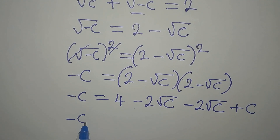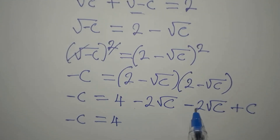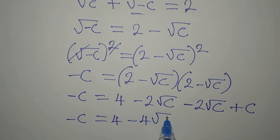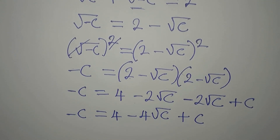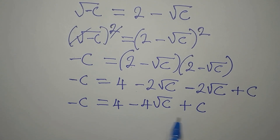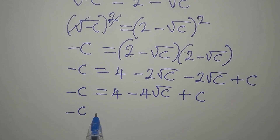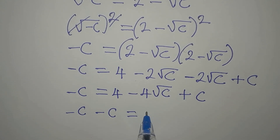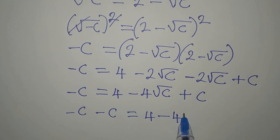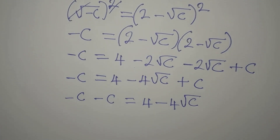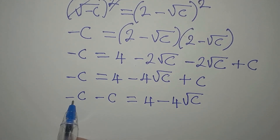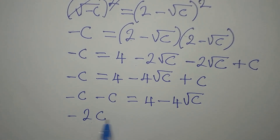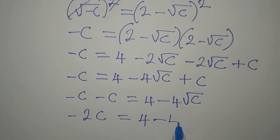Now we have minus c equal to 4. This and this together will give us minus 4 root c, then we have plus c. Mind you, this and this are not having the same sign, so we cannot eliminate them. Let's bring them together. So we have minus c equals 4 minus 4 root c. Then minus c minus c will give minus 2c, and that is equal to 4 minus 4 root c.